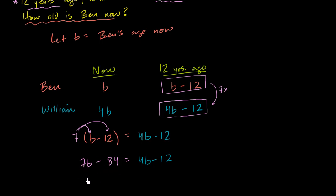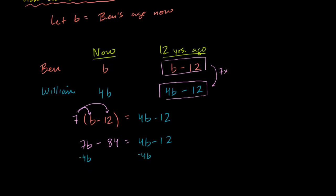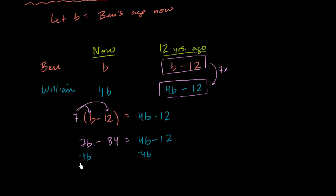This whole expression is literally seven times Ben's age twelve years ago. Now what can we do to solve this? Well, we can subtract 4b from both sides. So let's do that. So I'm going to subtract 4b from both sides, that goes away.